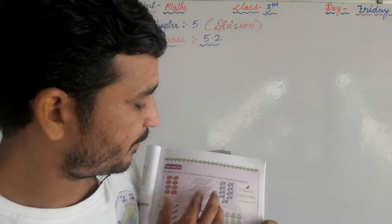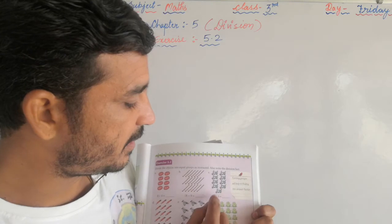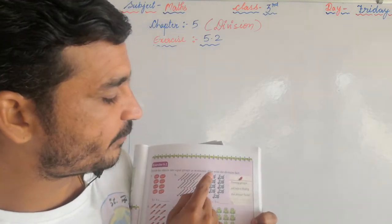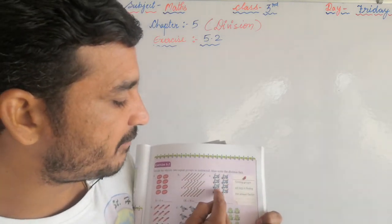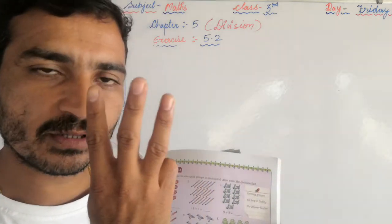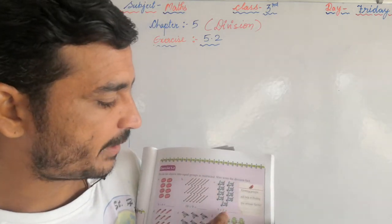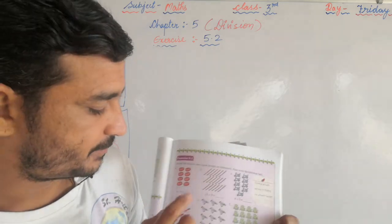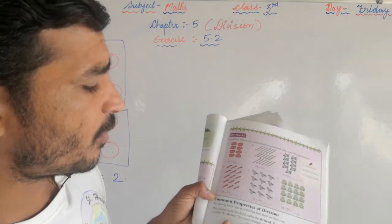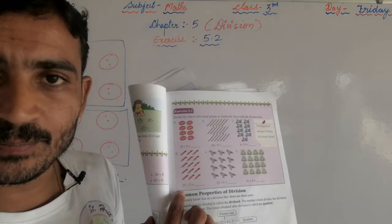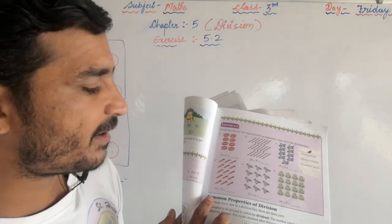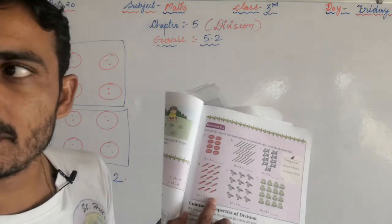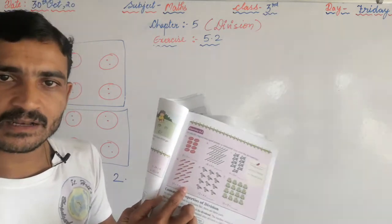Now see the scooters: 9 divided by 3. You have to make groups of three — one, two, three — there are three groups, so the result is three. Next, the number of pencils: total pencils are 15. You have to make groups of five pencils. There are three groups of five pencils, so you write three here.